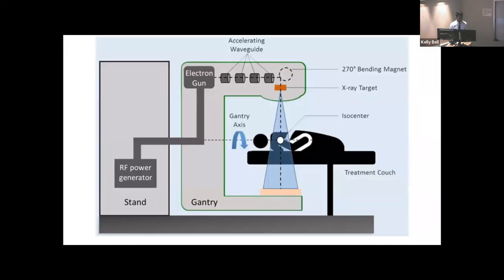A linear accelerator is connected to a power supply, which powers an electron gun that shoots out electrons and accelerates them toward a target. When they hit the target, they change direction and release Bremsstrahlung radiation. This radiation is filtered and targeted toward the patient as photon energy. Once it enters the patient, it's converted back into electrons — the charged particles that cause the downstream biologic effects.